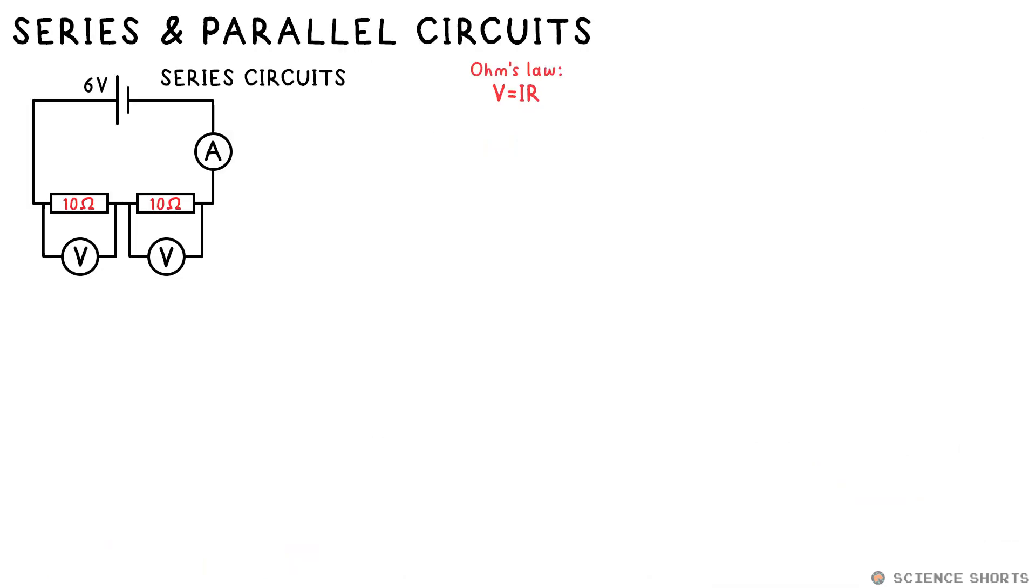Here's a simple series circuit, two resistors in line with the battery. What you need to remember is that for components in series, total PD is shared between them, current is the same for all of them, and the total resistance is just the sum of all resistances. That just means add it up. Let's deal with that first point. If these resistors are the same, let's say 10 ohms each, then that 6 volts total PD from the battery must be shared between them. So if we put a voltmeter across each of these, they'd both read 3 volts.